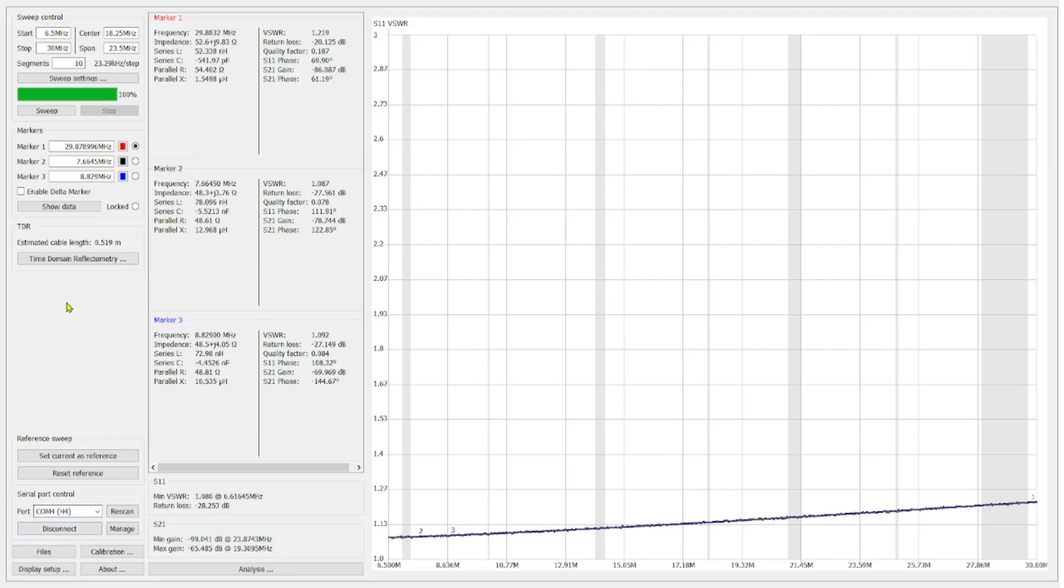The unun is connected and I'm going to hit the sweep button and we're going to run the sweep. You can see that the SWR is a little bit higher here. That means that our impedance transformation is not quite as good.